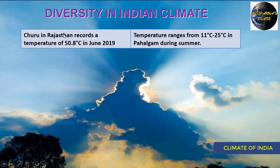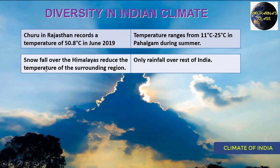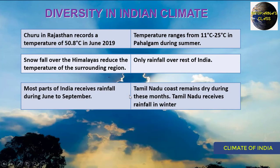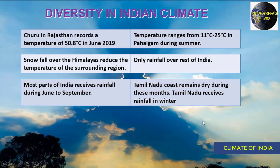The place Churu in Rajasthan records 50.8 degrees centigrade in June. But in Kashmir, the temperature ranges from 11 to 25 degrees centigrade during summer. Snowfall over the Himalayas reduces the temperature of surrounding regions, while in other areas, precipitation occurs only as rainfall. Most parts of India receive rainfall during June to September, but the Tamil Nadu coast — the Coromandel coast — remains dry during these monsoon months and receives rainfall only during winter. Monsoon is a very interesting phenomenon, and we observe different kinds of climate phenomena within a single country.